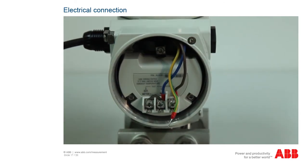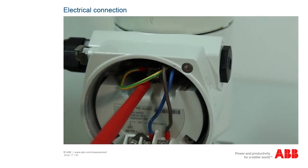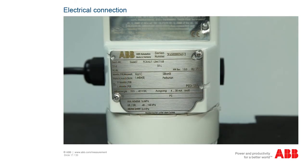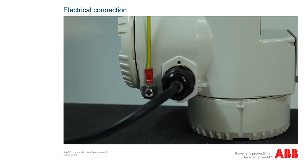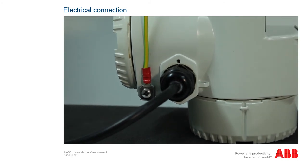Check first that the existing operating voltage corresponds to that indicated on the nameplate. The same lines are used for both the power supply and the output signal. A terminal is available on both the outside of the housing and in the plug for earthing (PE) the transmitter; both connections must be galvanically connected to one another. For a transmitter measuring loop, an earth should maintain a resistance of 5 ohms or less. Use a cable with a cross section of at least 15 AWG.